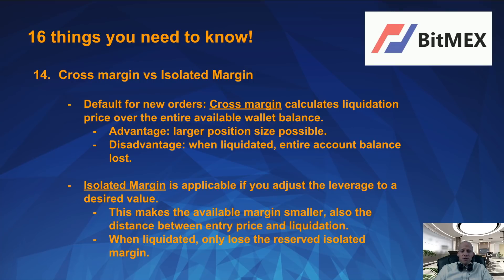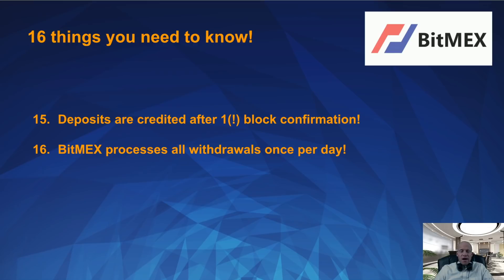There is also a difference between cross margin and isolated margin. The default for orders is cross margin, which calculates the liquidation price over the entire available balance. The advantage is that you can take a larger position size, but the disadvantage is that when you are liquidated, the entire account balance is lost. Isolated margin is applicable if you adjust the leverage to a desired value, making the available margin smaller and the distance between entry price and liquidation smaller. When you are liquidated with isolated margin, you only lose the reserved isolated margin. Deposits are credited after one block confirmation, and BitMEX processes all withdrawals only once per day.